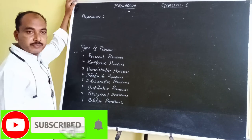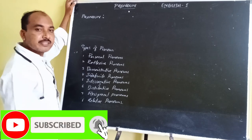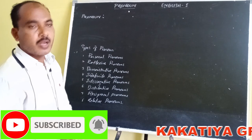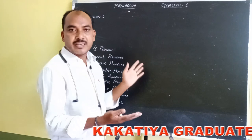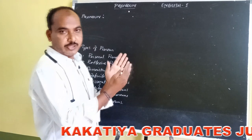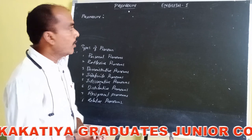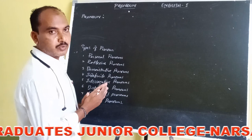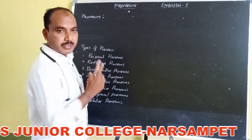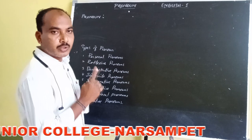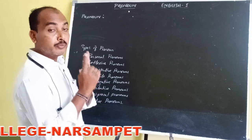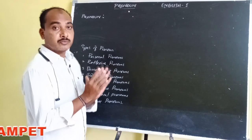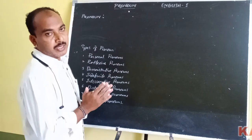In previous class, we discussed what is a noun. Noun can be divided into different types. Now we have got some command over noun. You have to remember that nouns, especially proper nouns, should be written with a capital letter. But other nouns should not be written with a capital letter.